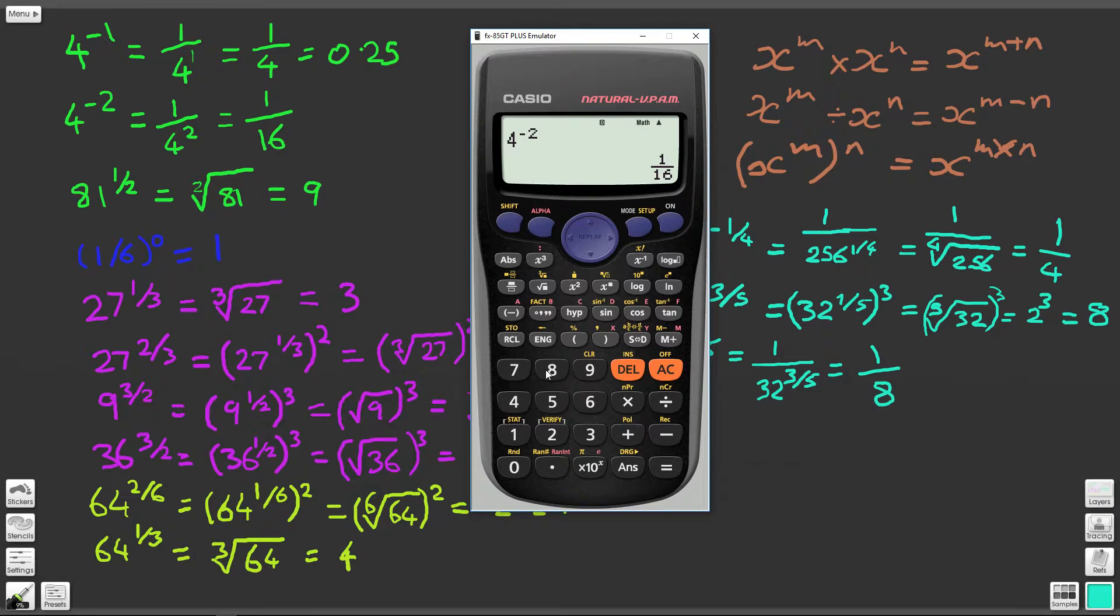Next we've got 81 to the power of one half. Now here we could put 1 divided by 2 and we'll get to the answer which is 9. So there we go, we've proved that that is the square root. This is the same as saying the square root of 81 is equal to 9.